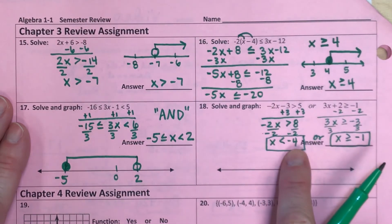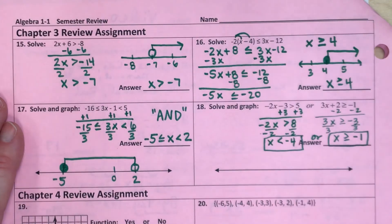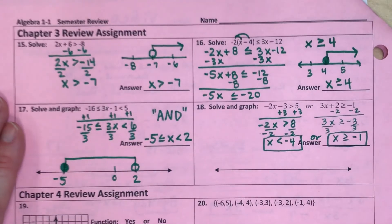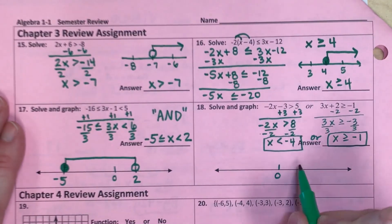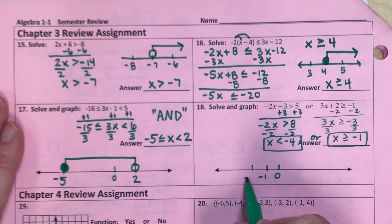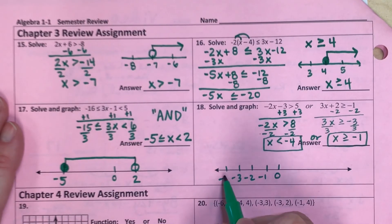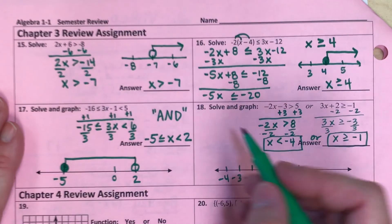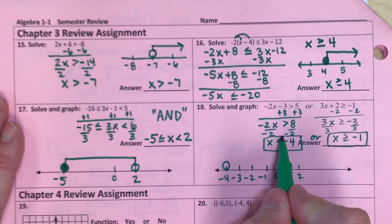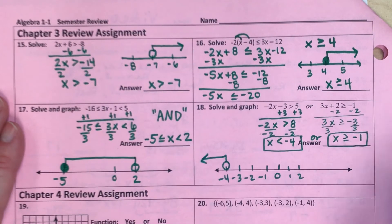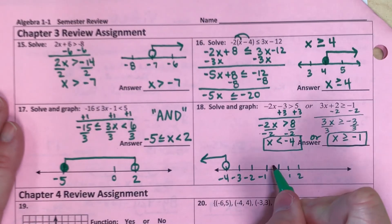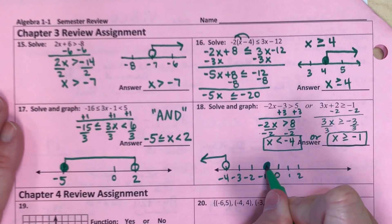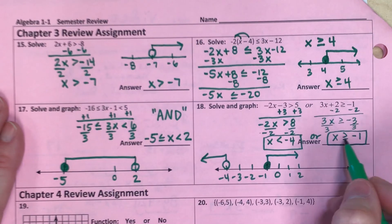So less than negative 4 or greater than or equal to negative 1. So I'm going to put 0 in the middle, negative 1, negative 2, negative 3, negative 4. Maybe I'll put a couple numbers over here. So I'll circle negative 4. Notice how my arrow points to the left, so I'm going to shade to the left. I'll circle negative 1 and fill it in. And then shade to the right because it says greater than. It points me in that right direction.